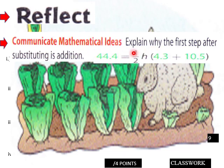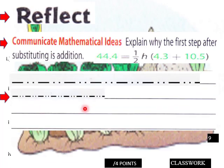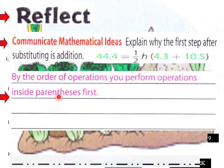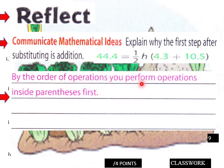Reflection: explain why the first step after substitution is addition. By the order of operations, you perform operations inside parentheses first. So you add what's inside the parentheses first, then multiply by one-half, then divide both sides by that number to end up with your height.